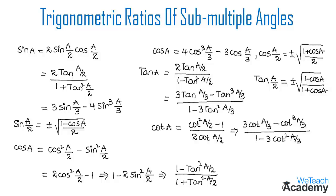Now let us write the formula for cot(A/2). So cot(A/2) will be equal to the reciprocal of tan(A/2), giving us plus or minus under root of (1 plus cos A) divided by (1 minus cos A).